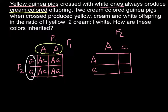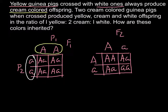Now when we build the Punnett square, the outcome would be different. Here we would have capital A, capital A (AA); here capital A, small a (Aa); capital A, small a (Aa) here; and small a, small a (aa) here. One quarter would be white colored — small a, small a produces white color.